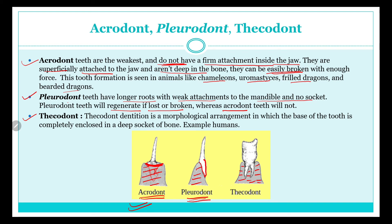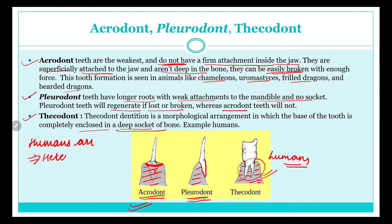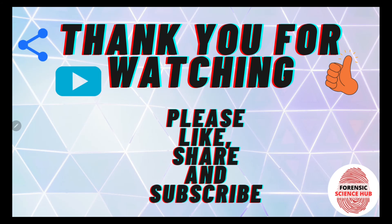Thecodont is a morphological arrangement in which the base of the teeth is completely enclosed in a deep socket of bone. As you can see, the root area is completely enclosed or embedded in the bony socket — this is what happens in humans. So to summarize: humans are heterodont (different types of teeth), diphyodont (two sets of teeth in life), and thecodont (teeth embedded in bony sockets).